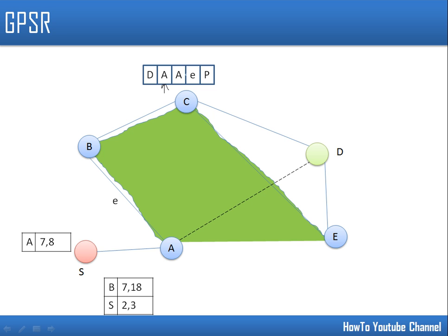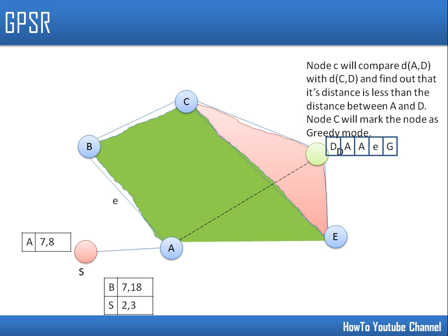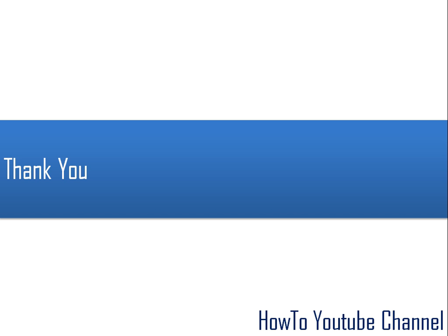Node c sees that greedy forwarding failed at node a because a had no neighbor closer to the destination. Node c compares its own distance to d with the distance between a and d. Since node c is closer to d than a was, node c changes the mode back to greedy. Perimeter mode is only used to avoid the situation where a packet cannot be forwarded in greedy mode. Node c now forwards the packet to node d, and the packet is successfully delivered.